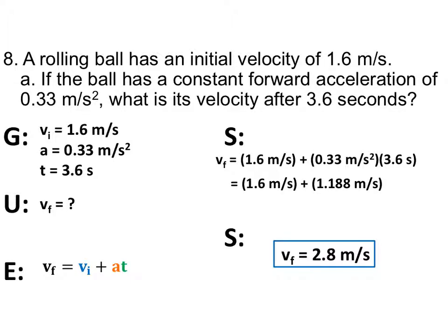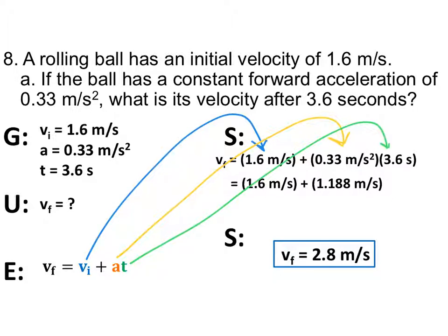Plug the numbers in: vi plus a times t. Remember order of operations — PEMDAS — so multiply first, then add. Don't plug everything into the calculator in one long string without parentheses, or it won't do the correct order of operations. Multiply a times t first, then add vi. When you do that correctly, vf = 2.8 meters per second.